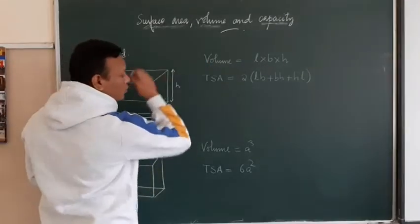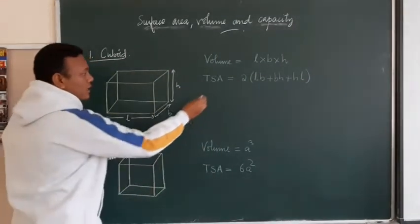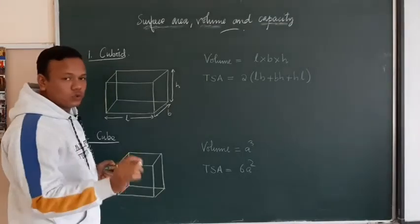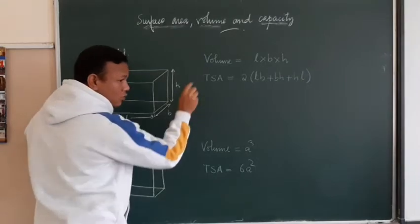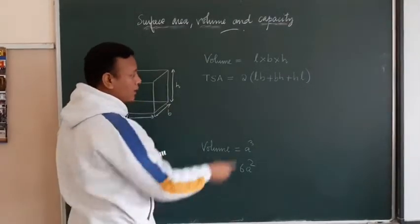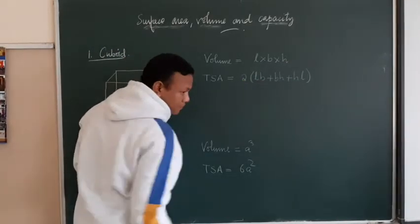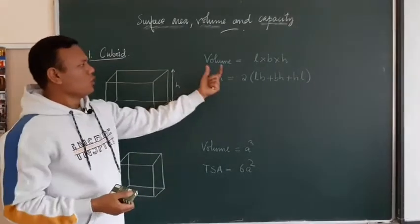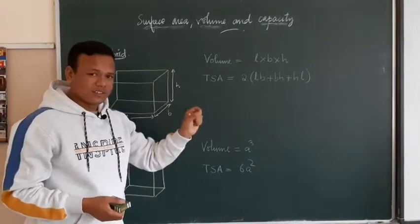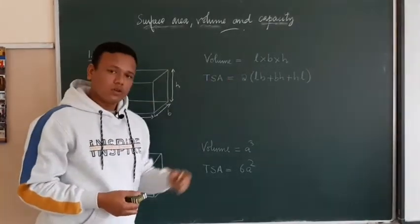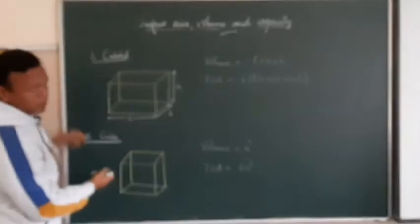If length is l, breadth is b, and height is h, then the volume formula will be l × b × h. TSA means total surface area, and the total surface area is given by 2(lb + bh + hl). If you want to know how to derive this formula, it is explained in your book. Please make a note of these two formulas in the same order.